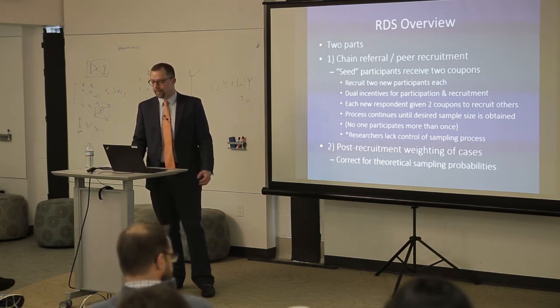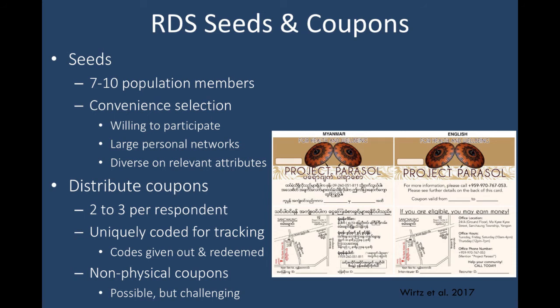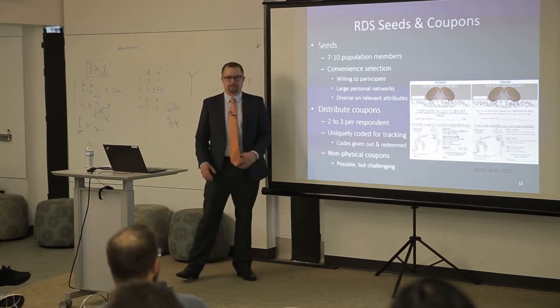Typically you'd start with seven to ten seed individuals, often from clinics or known populations. You try to identify seeds who are willing to participate and seem able to recruit others. You typically aim for seeds that have large personal networks — people who know lots of other members of the population. It's often recommended that your seeds be diverse on relevant attributes; so if you were sampling injection drug users, you might want seeds who have been injecting for a long time and ones who have been injecting for a short period, or ones in treatment versus formerly in treatment.